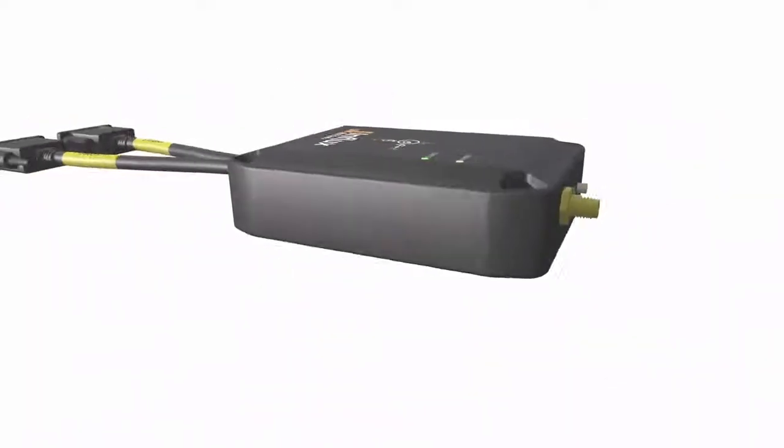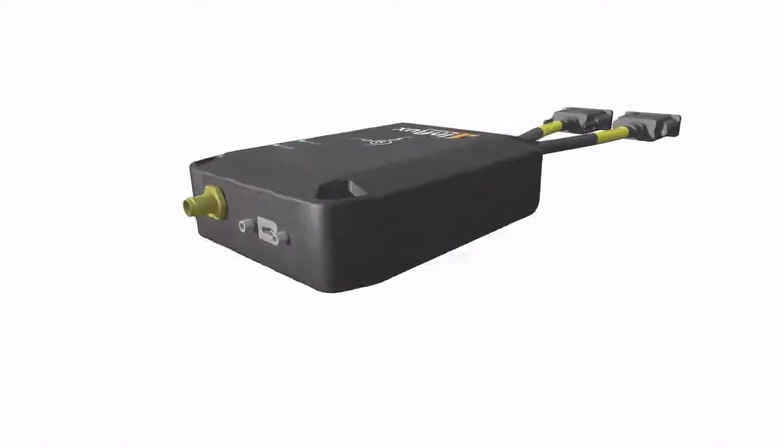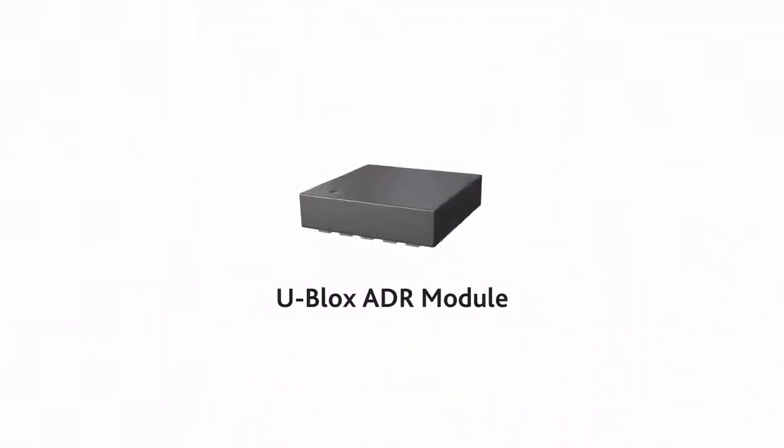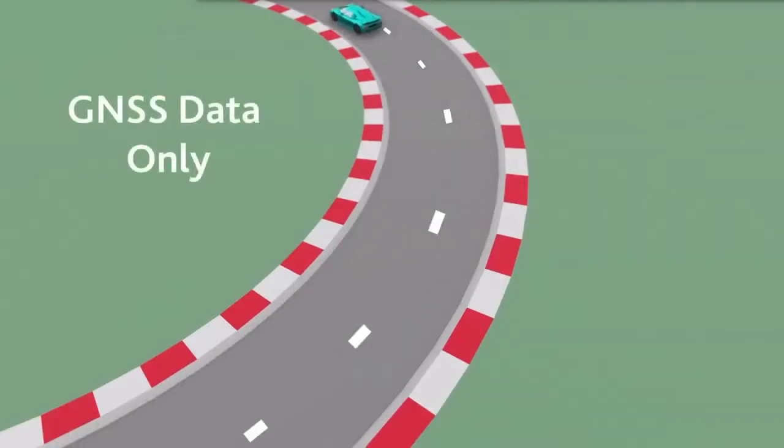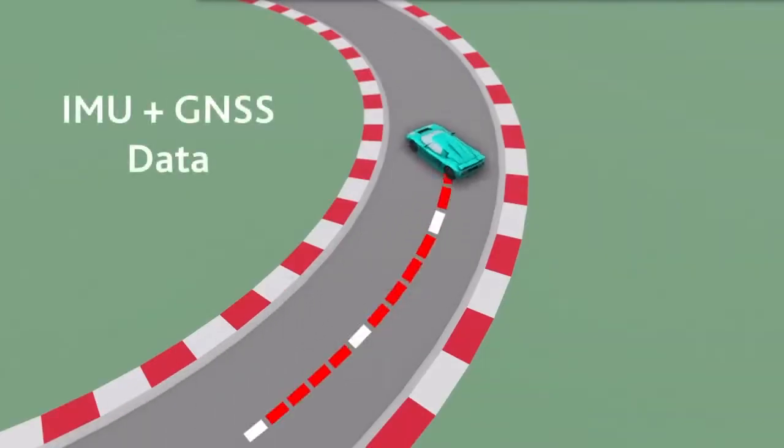Our RexGen2 IMUs contain built-in GNSS and IMU with a U-Blox ADR module. With gyroscope and accelerometer data having a higher update rate than GNSS, IMU solutions are able to provide a much more frequent and consistent form of data for accurate vehicle testing.